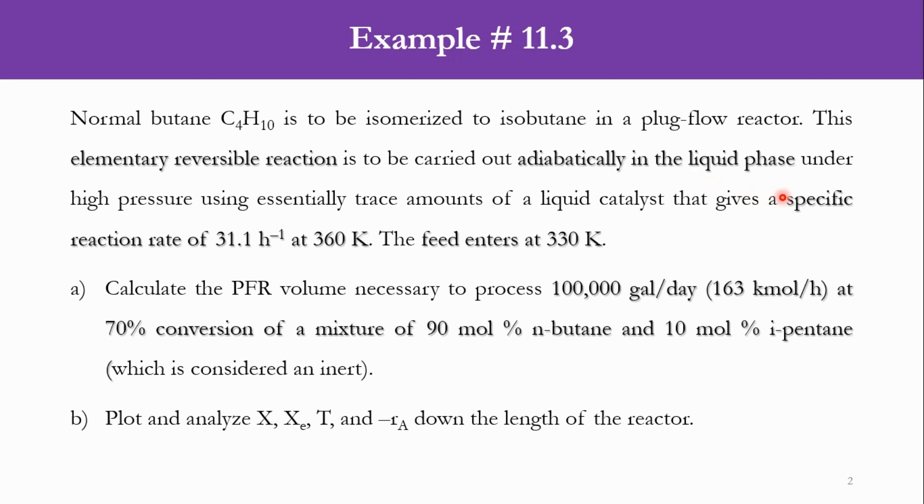We have been given the specific reaction rate at 360 Kelvin while the feed enters at 330 Kelvin. First thing is to calculate the PFR volume necessary to process 163 kmol per hour or 100,000 gallons per day at 70% conversion of a mixture of 90 mole percent n-butane and 10 mole percent isopentane. There are two components in the feed: n-butane which is converting to isobutane, and isopentane which will not react in the system. So this 10 mole percent is considered as inert.